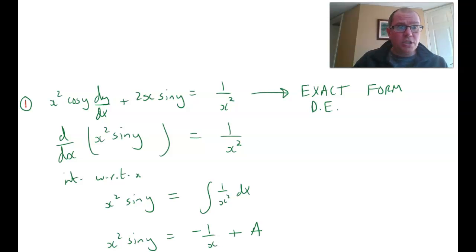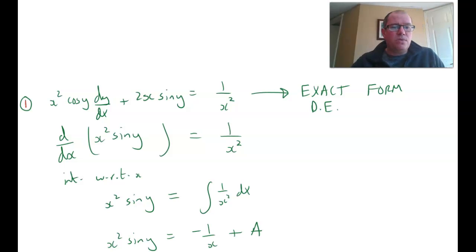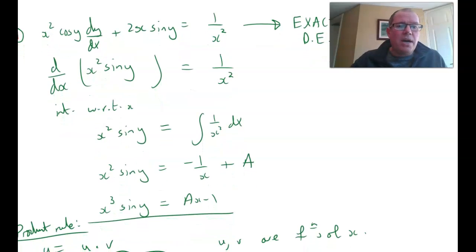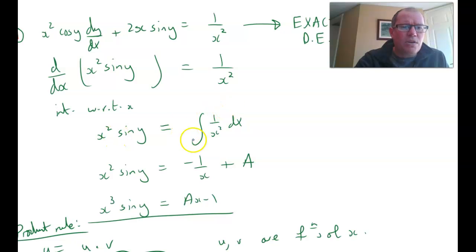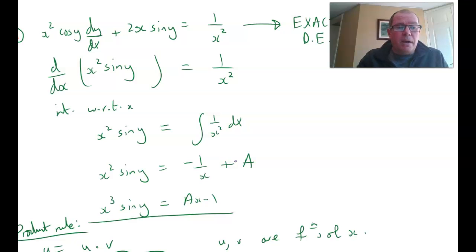You can either spot these purely from inspection, or I will show you a way of doing it using what's called an integrating factor. If you spot it through inspection, you can rewrite the left-hand side of the original differential equation as the derivative of a product, and then just integrate both sides with respect to x. So integrating both sides gives us x squared sine y equals the integral of 1 over x squared dx. When you integrate 1 over x squared, you get minus 1 over x, and that creates a constant of integration, which I'll combine with the constant from the left-hand side and call that plus a. And then we've solved that particular differential equation in exact form.